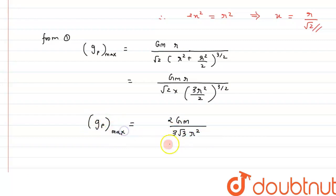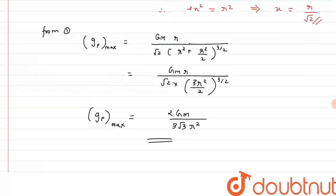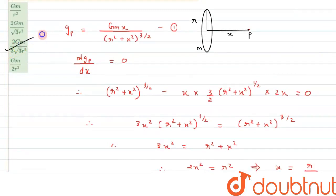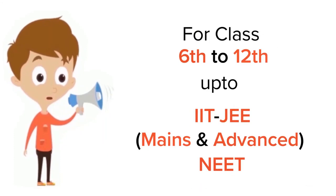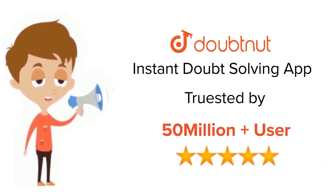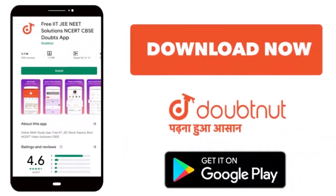So if we compare it with the option, we can clearly see option C matches with the answer. So I hope you have understood the concept and thank you for watching. For class 6-12, IIT JEE and NEET level, trusted by more than 5 crore students, download DoubtNet app today.